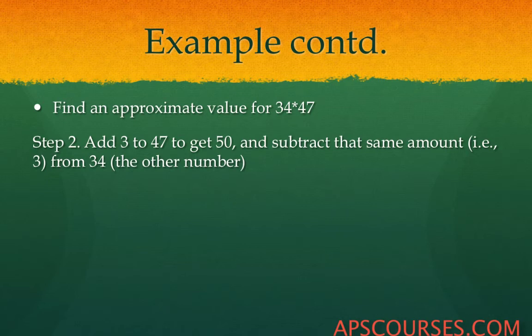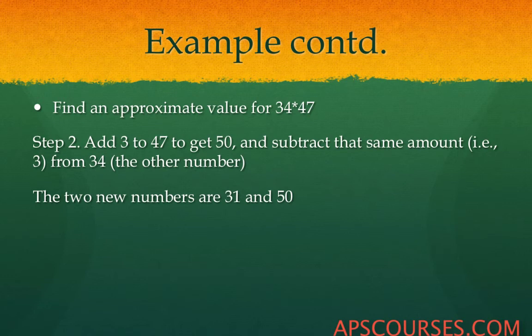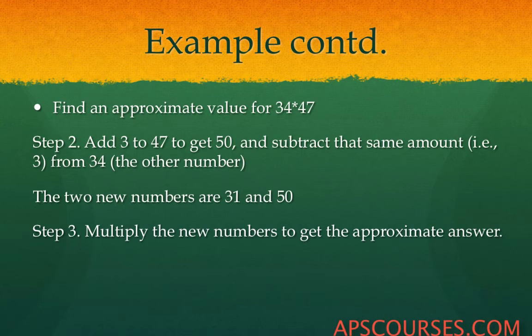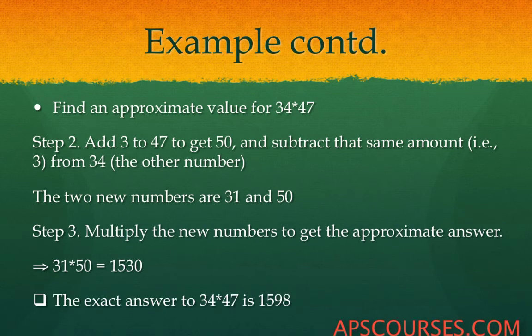In step 2, you convert 47 to 50 by adding 3 to it. Then you perform the reverse operation on 34 — since you added 3 to 47, you subtract 3 from 34. The two new numbers are 31 and 50. Multiply them to get the approximate answer of 1530. The exact answer of 34 multiplied by 47 is 1598, so you get a roundabout answer of 1530.